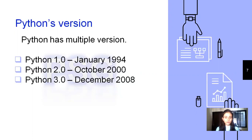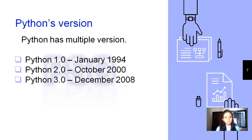I had already provided you the link to download Anaconda, the Anaconda version 2020. When you download it, it shows that you are downloading with Python 3.x version. So in Anaconda 2020, we are having Python 3.7 version.